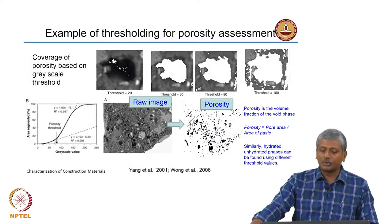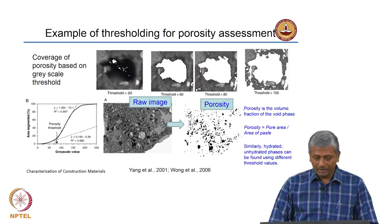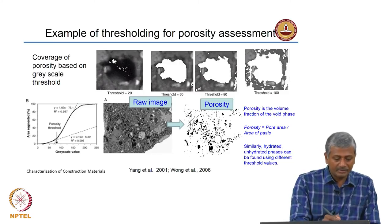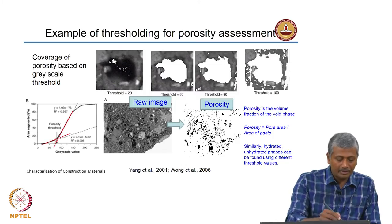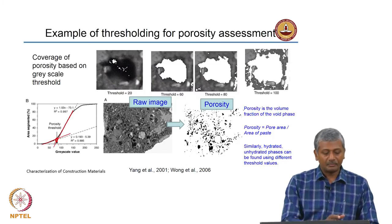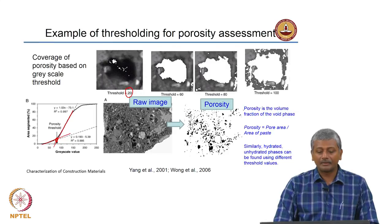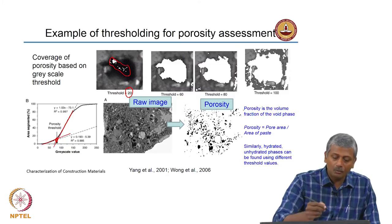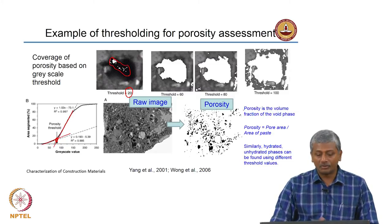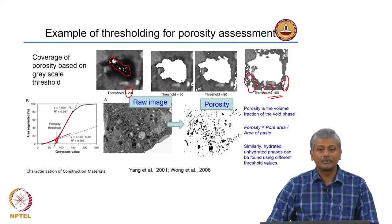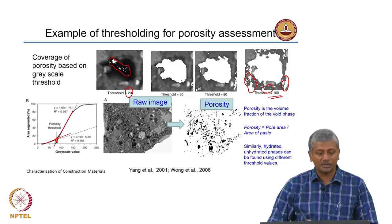This is thresholding for porosity assessment done in a slightly different manner. The coverage of porosity is based on greyscale threshold — the tangent is taken here and the porosity threshold is determined between 50 and 100 in this case. When the threshold is 20 you are only capturing a small part of your void. When the threshold is 60 you are capturing most of the void, but if the threshold is 100 you are also capturing other points outside the void that may not be part of it. You can go completely wrong if you do not do a proper thresholding operation.